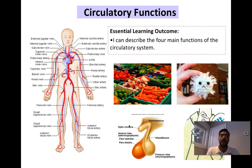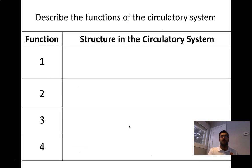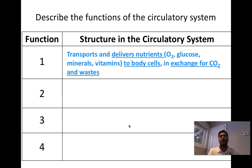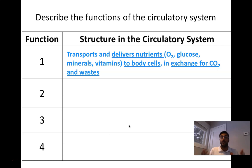The circulatory system has four major functions. The first is to transport and deliver nutrients — oxygen, sugars, glucose, minerals, and vitamins — to body cells. When we deliver these necessary nutrients, we also take carbon dioxide and other wastes away from those cells. Carbon dioxide is considered a waste because it's poisonous to cells after cellular respiration occurs. Too much carbon dioxide can create an acidic environment, which harms the cell's ability to continue its normal processes.